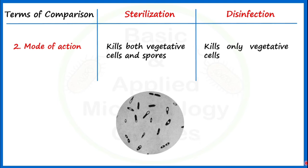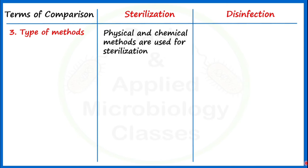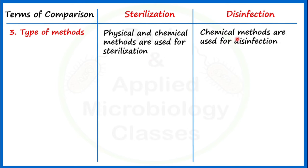Let's move towards the third point of difference: type of methods. If we talk about sterilization, physical and chemical methods are used to carry out sterilization in the laboratory. Let's see examples of physical and chemical methods used in sterilization.